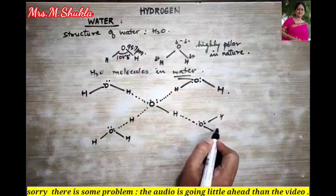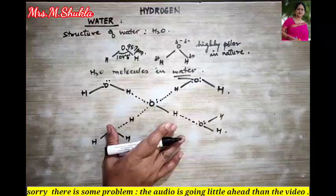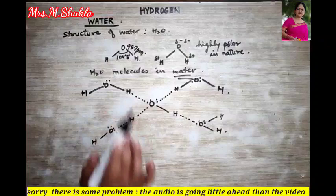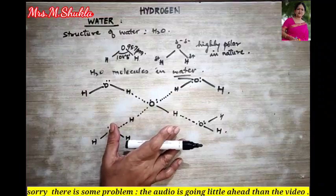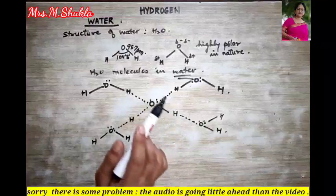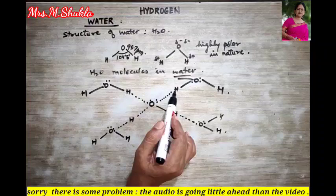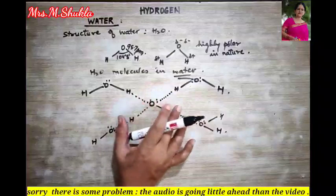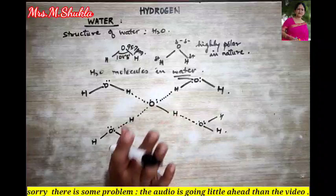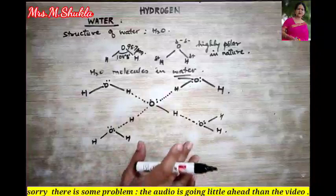Each hydrogen atom of a water molecule forms a hydrogen bond with the lone pair of electrons on the oxygen atom of a different water molecule. Similarly, the two lone pairs of electrons on the oxygen atom form two more hydrogen bonds with two other water molecules. In this way, each water molecule is involved in hydrogen bonding with four other water molecules at a time. This type of hydrogen bonding extends throughout the liquid state of water.